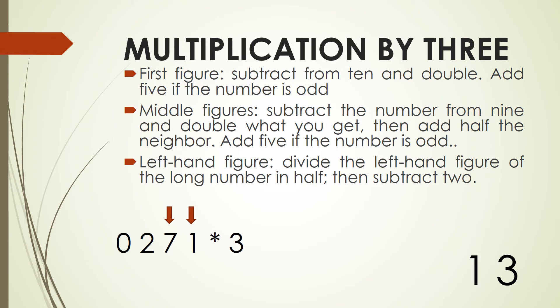Next one: 9 minus 2 is 7. Double that 7 is 14. Plus half of the neighbor, which is 3, gives 17. Plus the 1 we were carrying gives 18. We write 8 and carry 1.